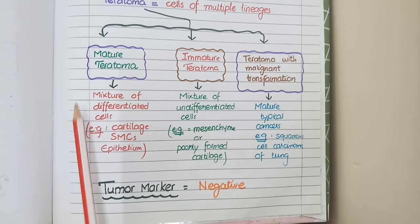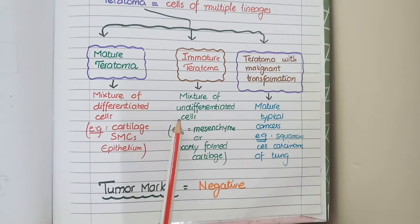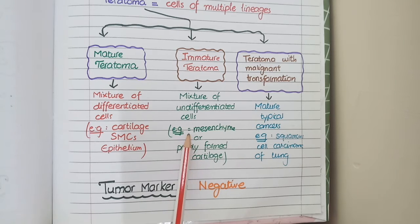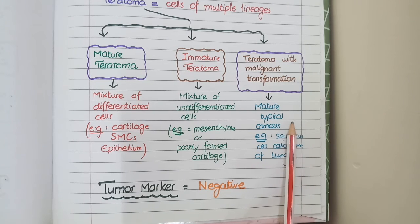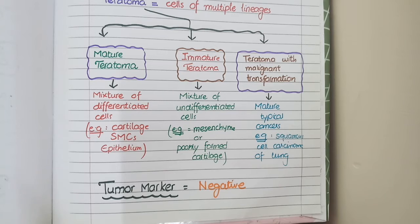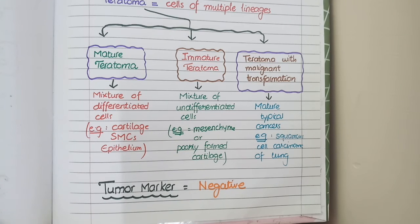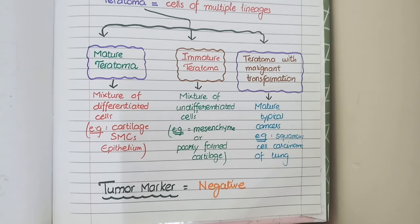Mature teratomas contain mature or differentiated cells such as smooth muscle, cartilage, and epithelium. Immature teratomas contain a mixture of undifferentiated cells such as mesenchyme or poorly formed cartilage. Teratomas with malignant transformation contain components that undergo malignant change, appearing like mature carcinomas of other organs such as squamous cell carcinoma of lung or adenocarcinoma of colon. The tumor marker for pure testicular teratomas is negative.